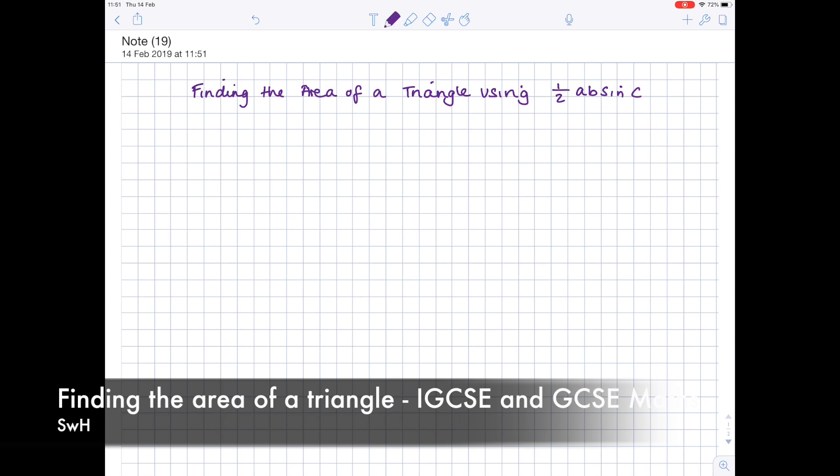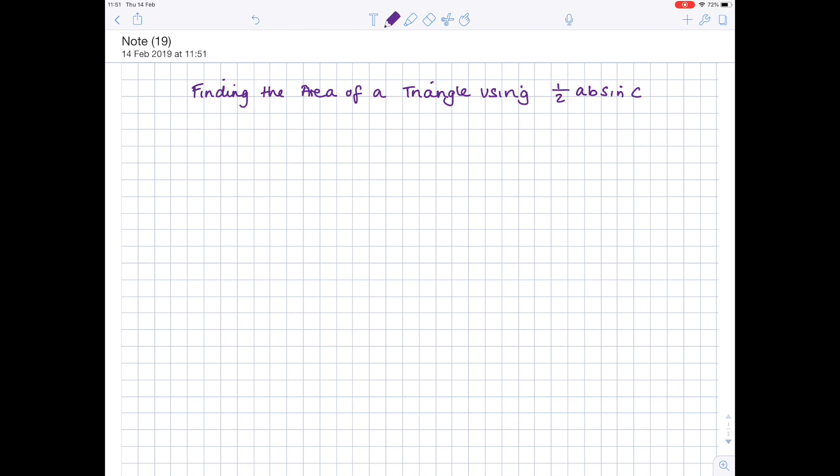In today's IGCSE and GCSE video, we're going to be looking at finding the area of a triangle using half AB sine C. So this is when you don't have a right angle triangle, so you can't just do half base times height.